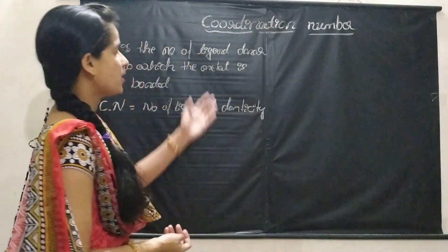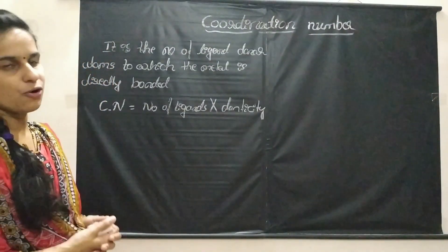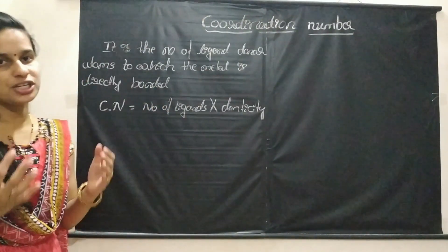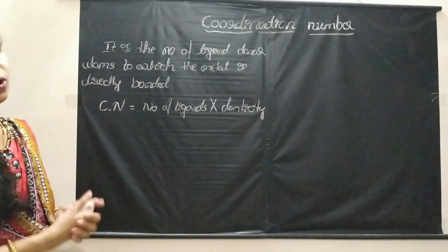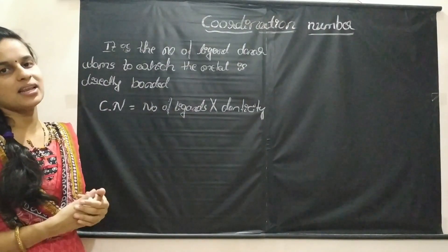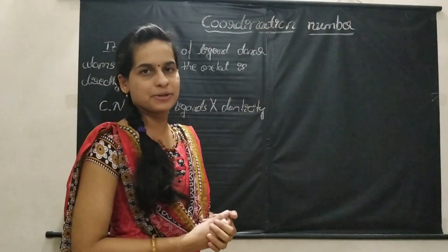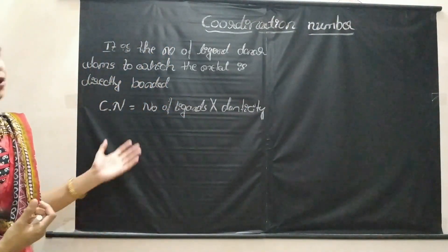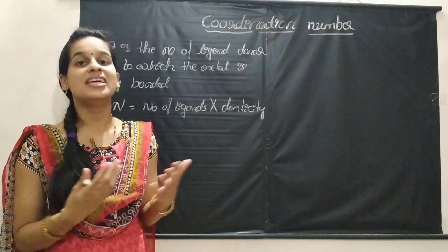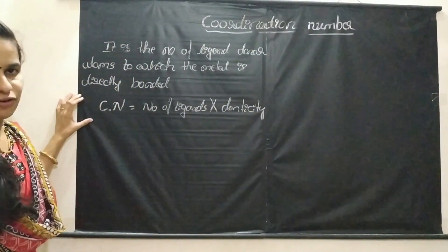Okay friends, let us come to today's topic — coordination number of central metal atom. First, let us know what is the meaning of coordination number of a central metal atom. In a coordination entity or coordination complex, the number of ligand donor atoms to which the central metal atom is directly bonded is nothing but the coordination number. Or simply, coordination number is the number of coordination bonds formed by the central metal atom.